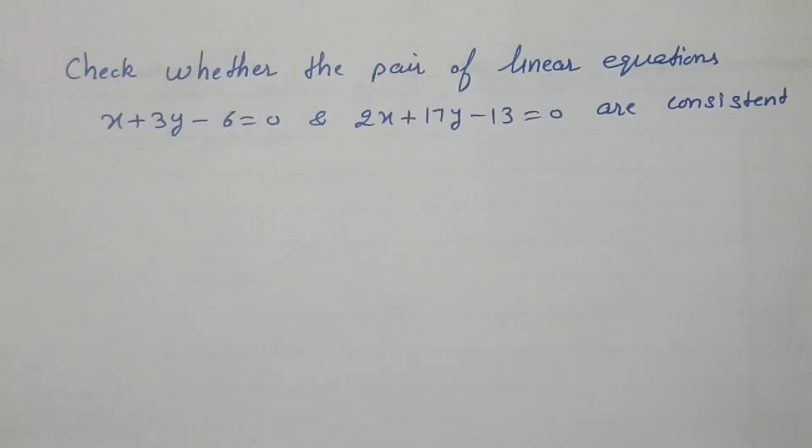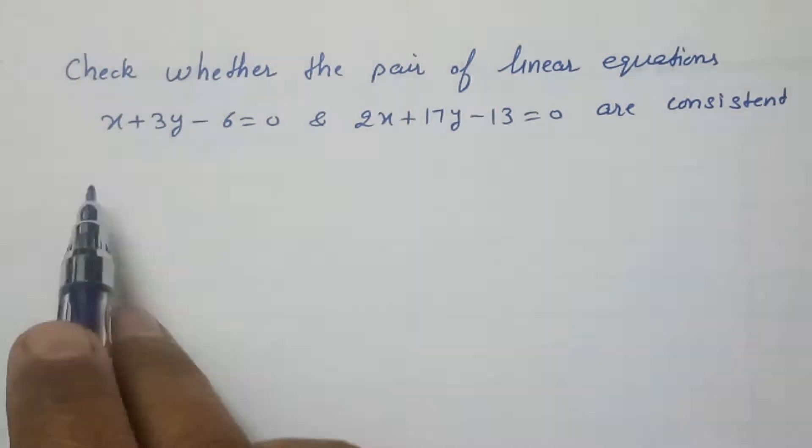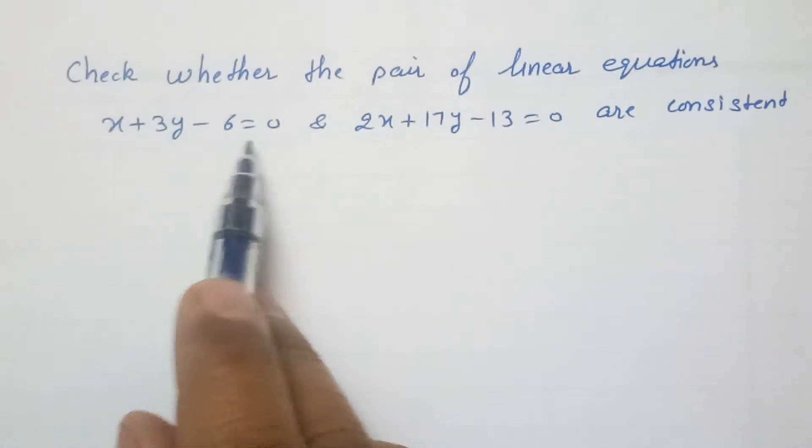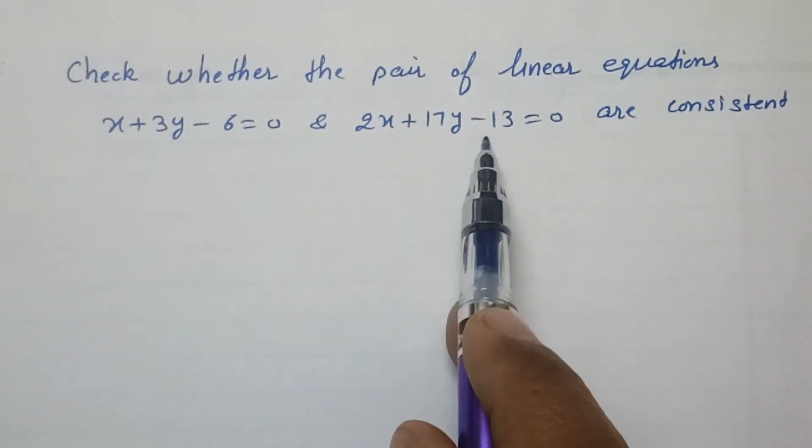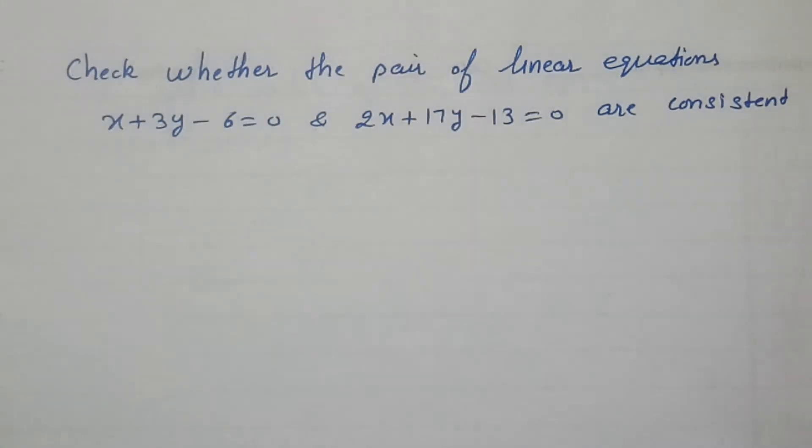Students, this question is from linear equations in two variables. It is given: check whether the pair of linear equations x plus 3y minus 6 equal to 0 and 2x plus 17y minus 13 equal to 0 are consistent or not.